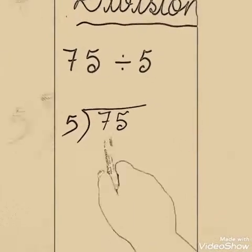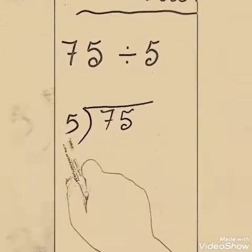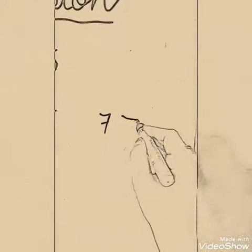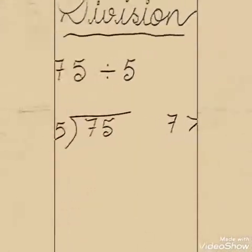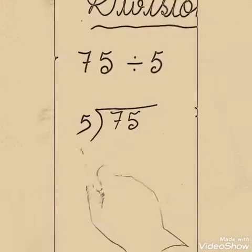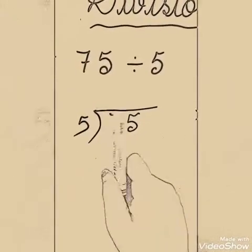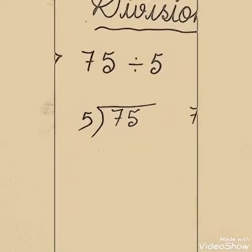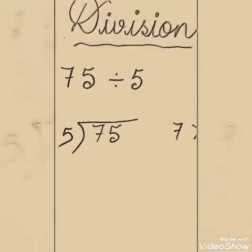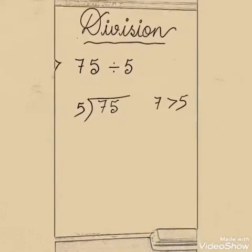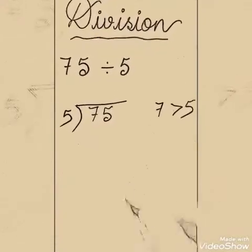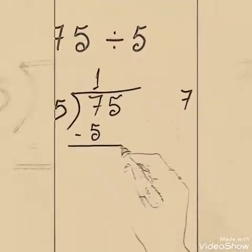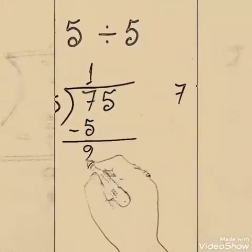Now you have to check if the first digit is greater than or less than the divisor. Here you will see 7 is greater than 5. So see the table of 5 to get a number which is just less than 7. 5 ones are 5. 5 twos are 10. 10 is greater than 7, so we will stop. We will take 5 ones are 5. Subtract these two and you will get 2.